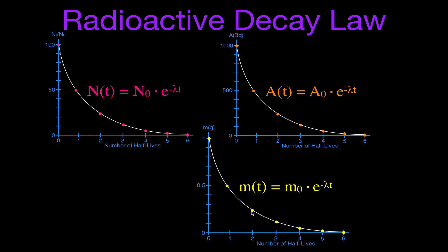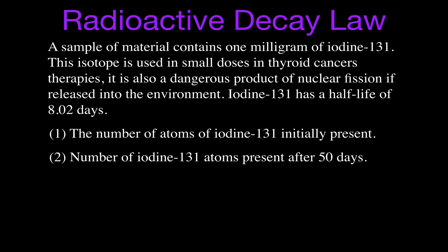Now let's try a problem. We have a sample of material that contains one milligram of iodine-131. As background information, a dose of less than one milligram is used for thyroid cancer therapy. It's also a byproduct of nuclear fission and is considered highly active because it has a high decay rate due to its short half-life. The half-life of iodine-131 is only 8.02 days. We want to find the number of atoms initially present, and then the number remaining after 50 days.